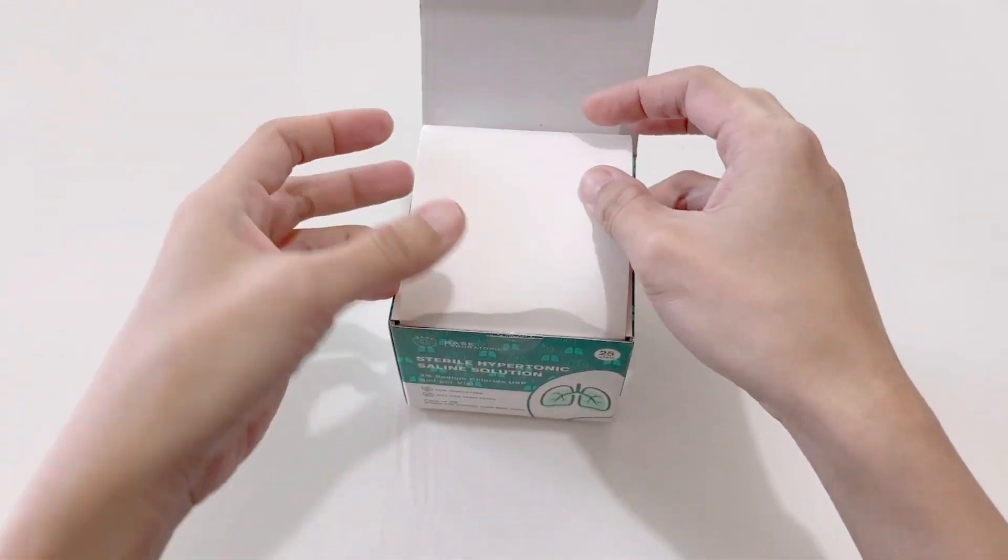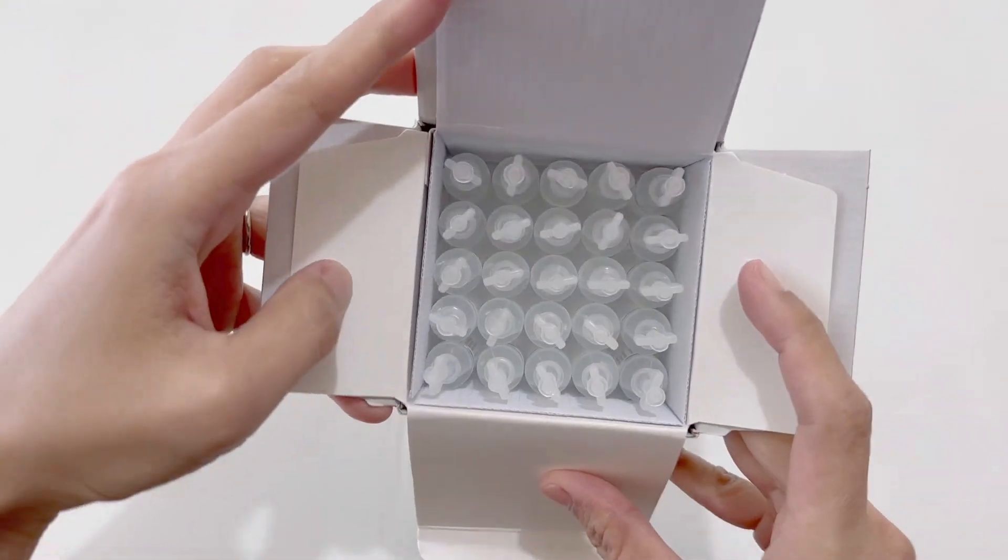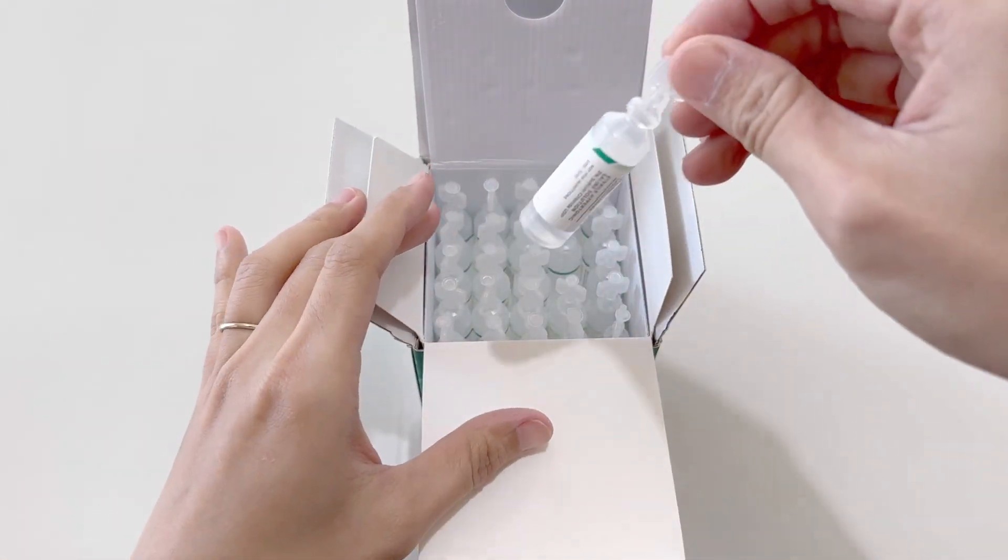Each vial has 5 milliliters or 1 teaspoon of solution. This particular box comes with 25 in it. The box is nice and sturdy and they are very easy to grab out.